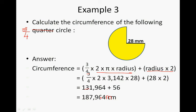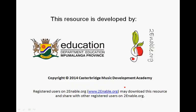So it's 187.964 millimetres, and then the answer will be 187.964 millimetres. It is important to have the correct units. Marks get deducted if your units are incorrect. And that is how to calculate the circumference of parts of circles — semi-circle, quarter circle, and three-quarter circle. Thank you very much.